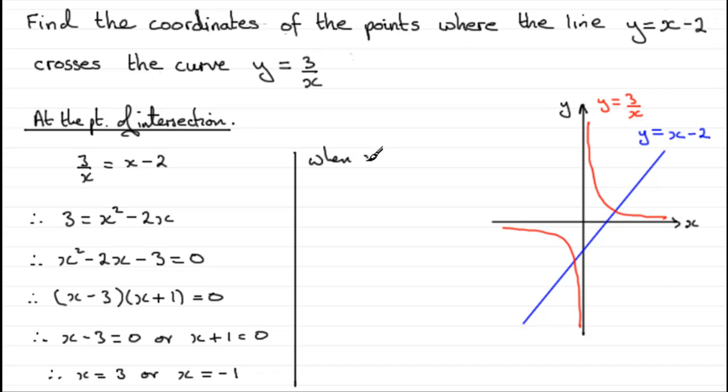So we've got that when x equals 3, y would equal, we'll go for this one, 3 divided by 3, which is going to be 1. And when x equals minus 1, y would equal 3 divided by minus 1, so we'd have y equals minus 3.